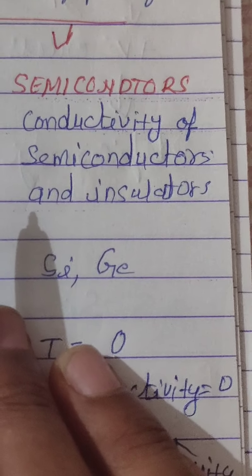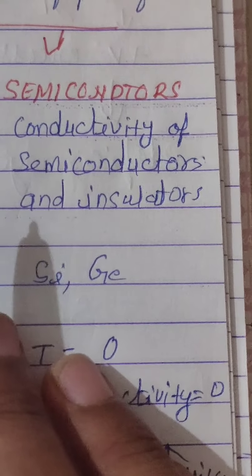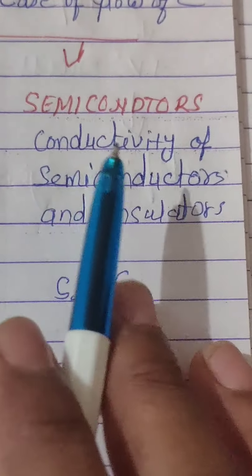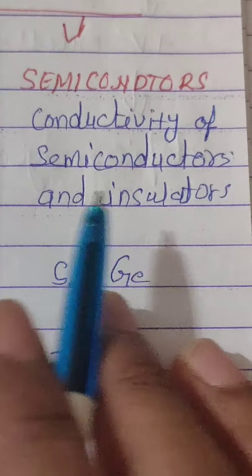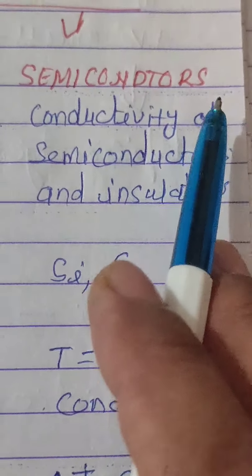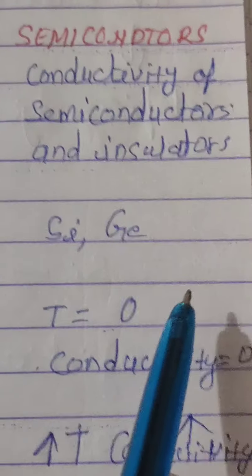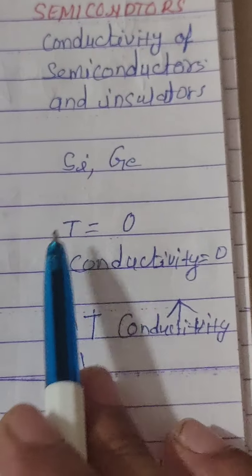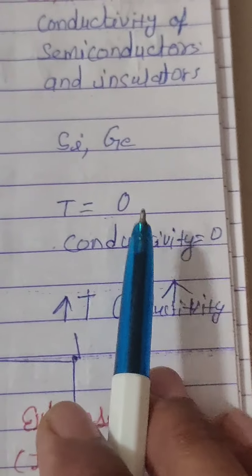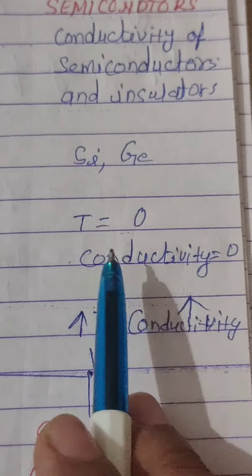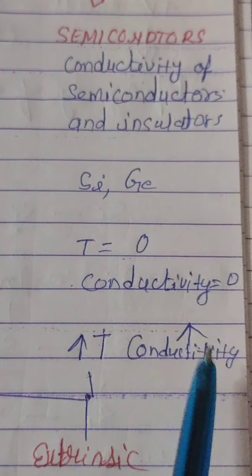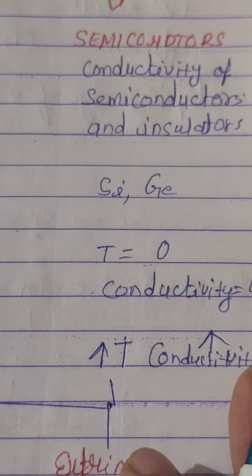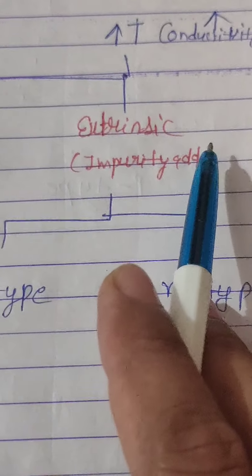Other examples of insulators are sulfur, phosphorus, and plastic. Third are semiconductors. Semiconductors are materials whose conductivity is between that of a conductor and an insulator. As temperature increases, the conductivity of semiconductors increases. Semiconductors are of two types: intrinsic semiconductor and extrinsic semiconductor.